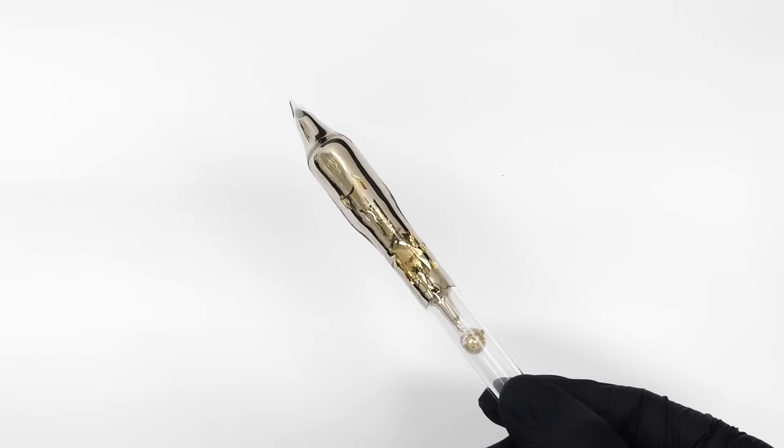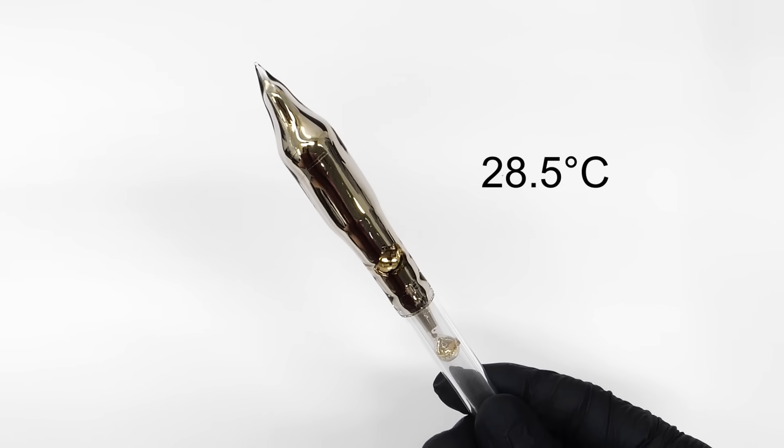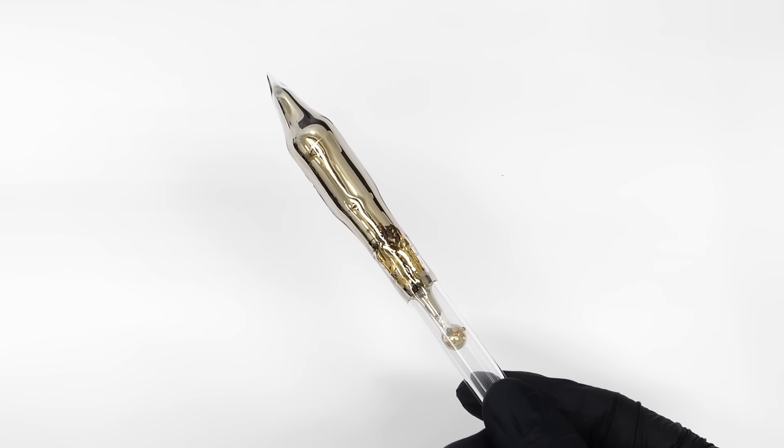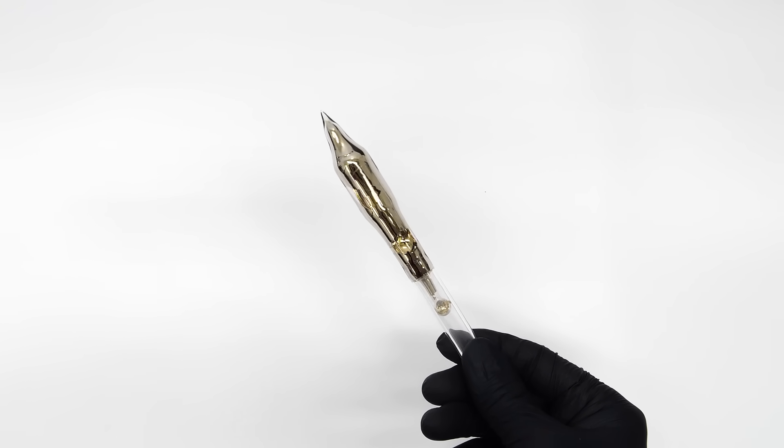The melting point of cesium is only about 28.5°C, or 83 Fahrenheit. This makes it extremely close, but not quite a liquid at room temperature.